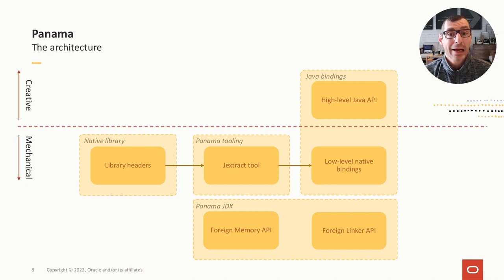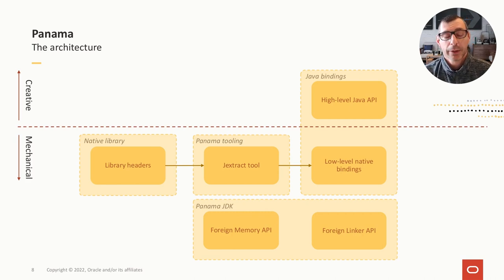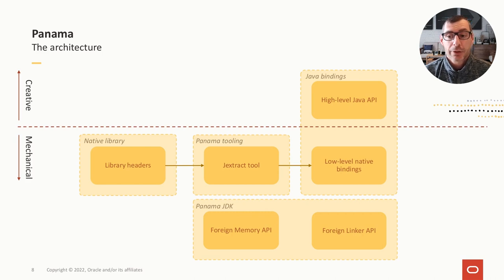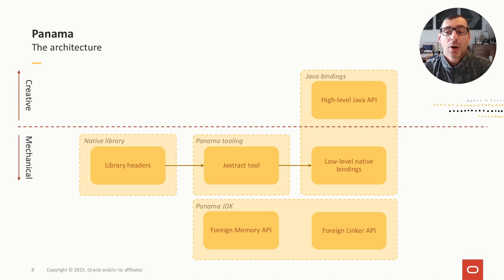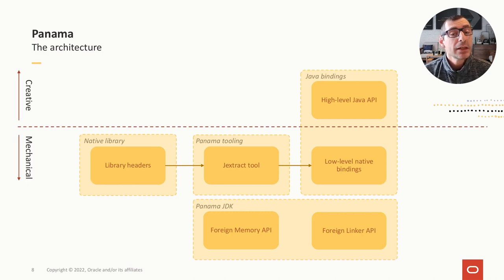The process described is entirely mechanical — we point JExtract to some headers and get Java bindings back. These bindings are sufficiently expressive for quick native library access. Library developers may want to create a higher-level library on top, which requires some human intervention to inject domain-specific knowledge. Using JExtract is entirely optional: if you already have an automated tool generating JNI bindings, you can still benefit from Panama by replacing those bindings with higher-level bindings written entirely in Java.